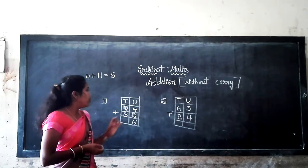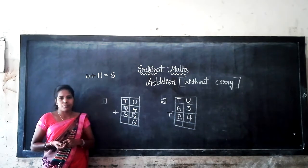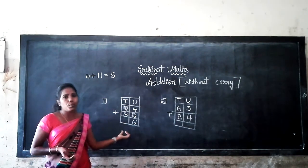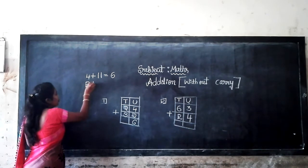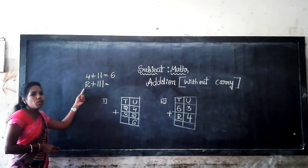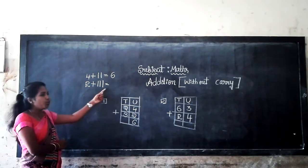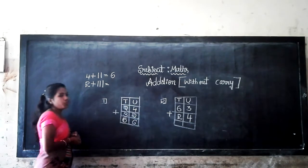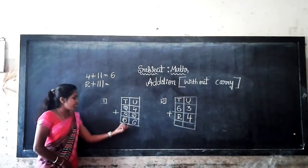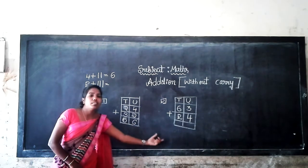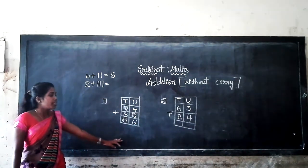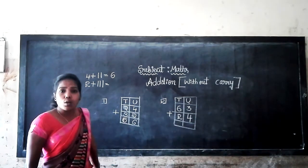Now let's go to the tens place numbers. Which are the tens place numbers here? They are 2 and 3. What is the sum of 2 and 3? Count from 2: after 2 is 3, 4, 5. So 2 plus 3 is equal to 5. We get 56. In 56 there are 5 tens and 6 units. This is addition without carrying — there is no carrying here.